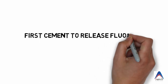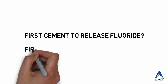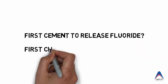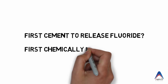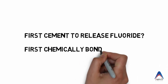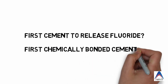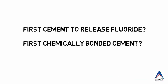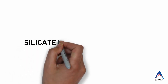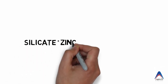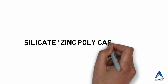So if somebody asks you which is the first cement to release fluoride, it is the silicate — but silicate never had a chemical bond. The first chemically bonded cement is zinc polycarboxylate, which also has fluoride releasing property.